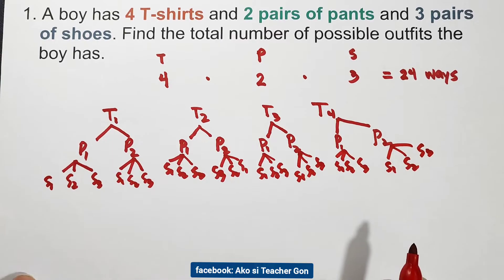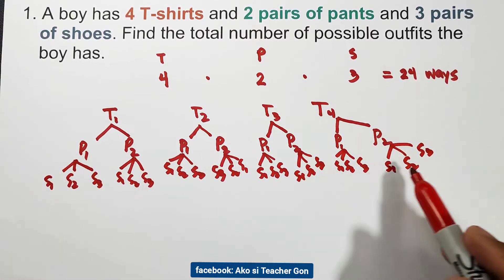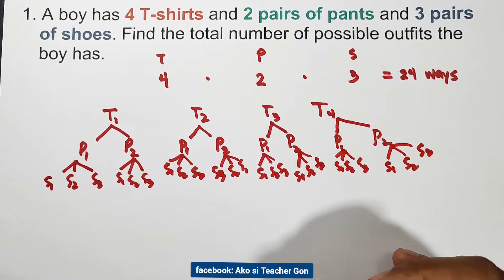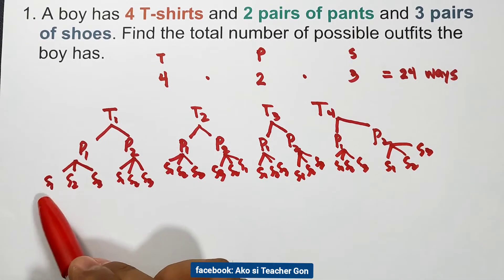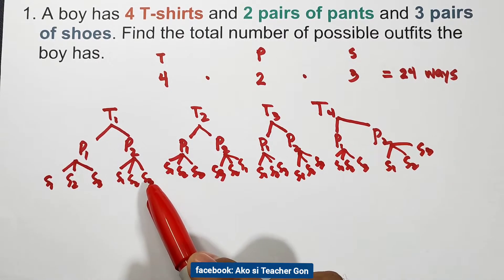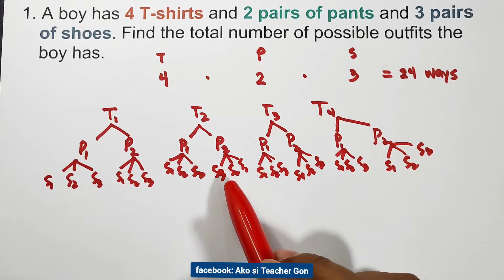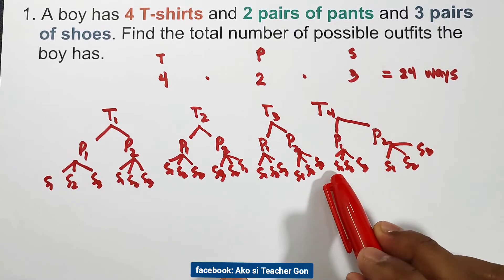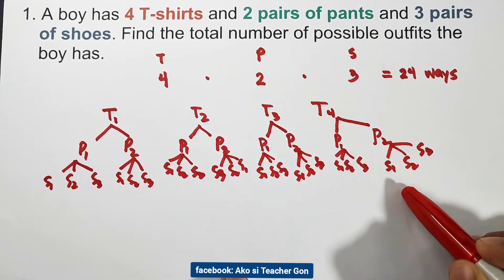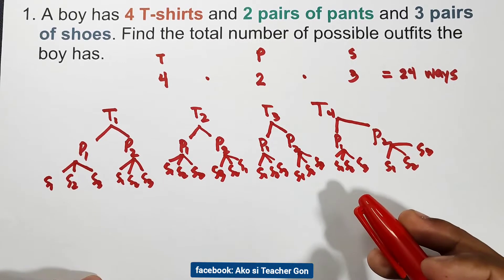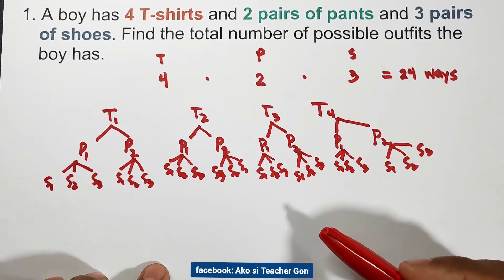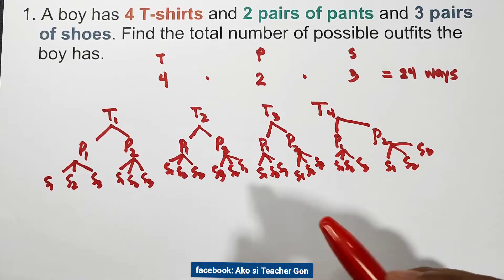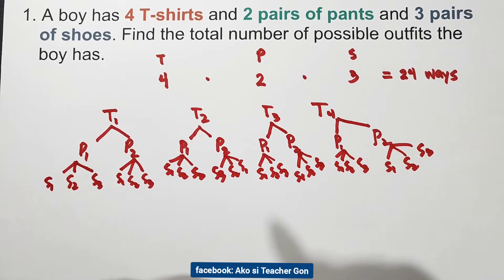By counting all the pairs to make a possible outfit, we count from 1 through 24. So there are 24 possible outfits that the boy can wear.